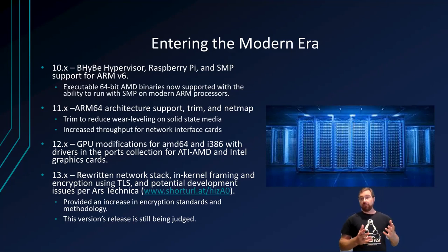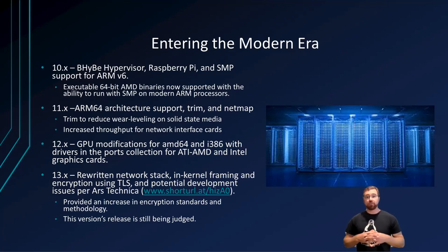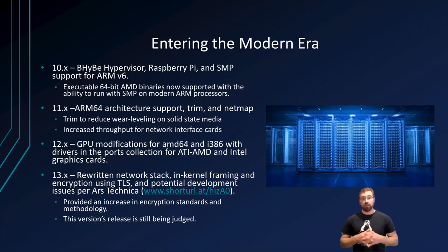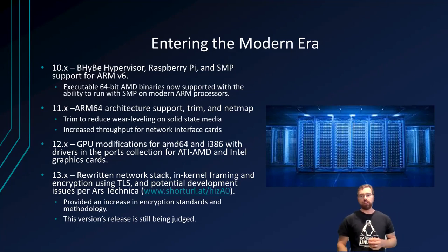With FreeBSD 12 in 2018, GPU modifications were made for processing on AMD64 and i386 processors, and allowed graphics drivers for modern Intel and ATI/AMD graphics cards available in the ports collection. This is highly useful in a data-driven world where large amounts of local computation is now performed on GPUs as opposed to the CPU.